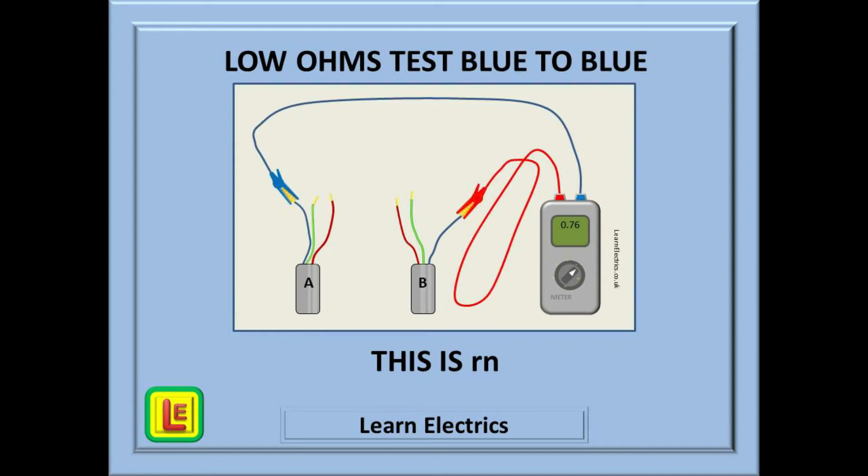Now we can repeat the test using the two blue or neutral conductors. Because the line and neutral are the same size conductor, the reading should be about the same. Here we record 0.76 again. This is known as little r little n. This tells us it is an end-to-end test of the neutral conductor.